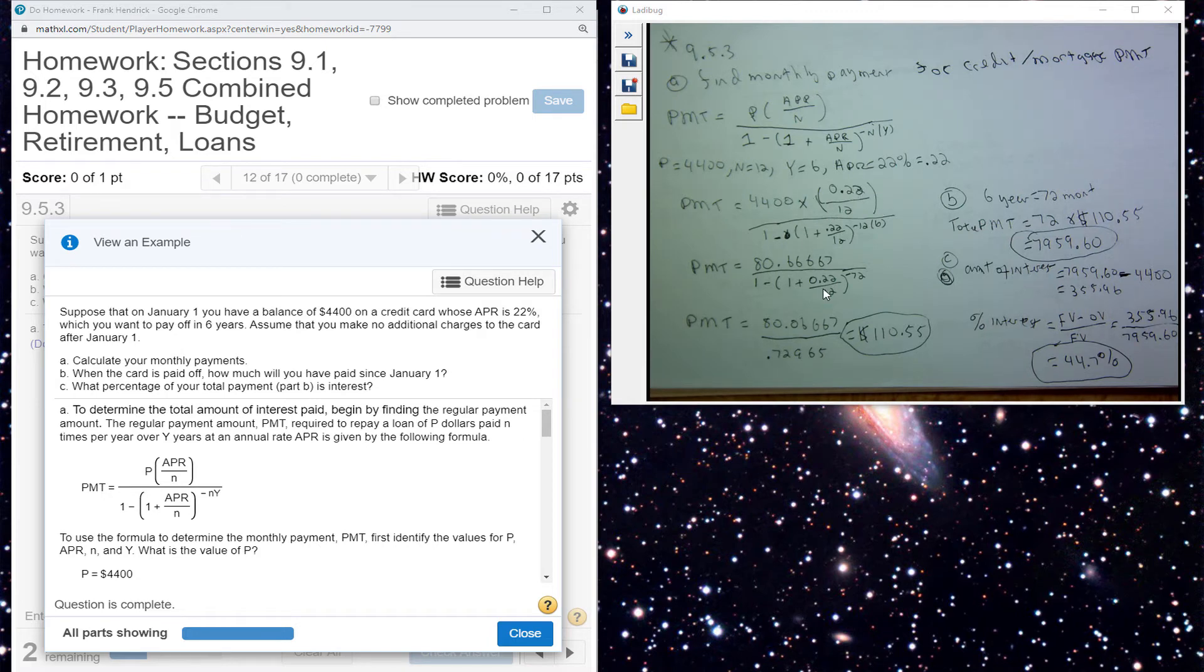Then I simplify my denominator. And make sure I went out to enough places here, because we calculate it to the penny. It gives you my payment to be $110.55.